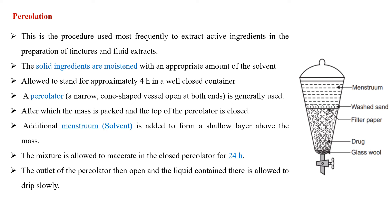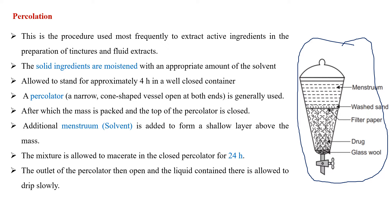Next is the percolation process. It is somewhat similar to maceration, but uses an apparatus called a percolator, which has a funnel-like separating structure. The solid crude drug is placed at the bottom of the percolator. Prior to packing, the drug must be moistened with the appropriate solvent and soaked for four hours.